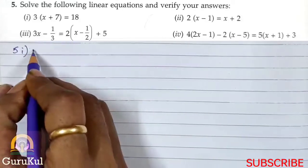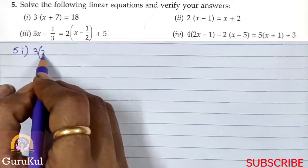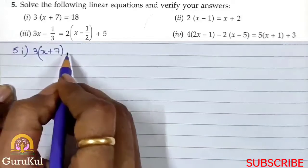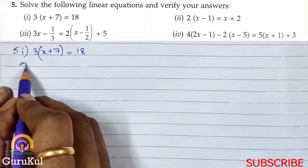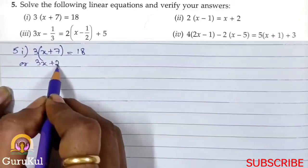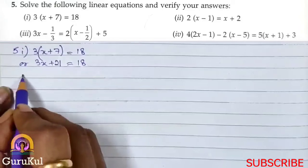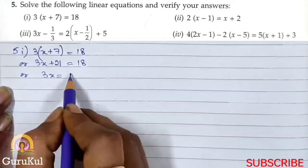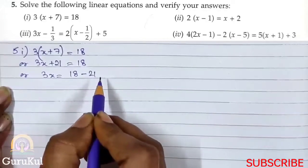So the first part: 3 bracket x plus 7 bracket close is equal to 18. Expanding: 3x plus 21 is equal to 18. And 3x is equal to 18 minus 21.